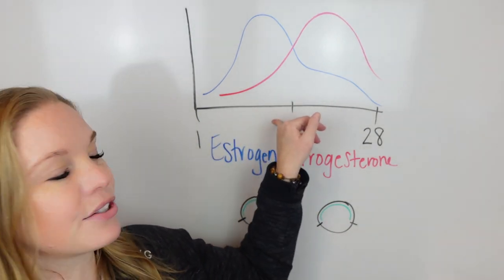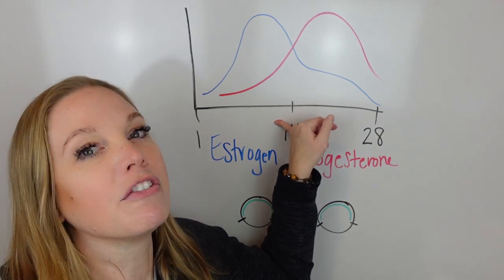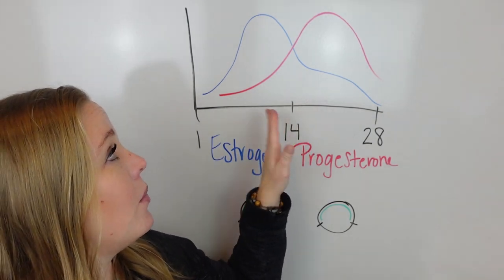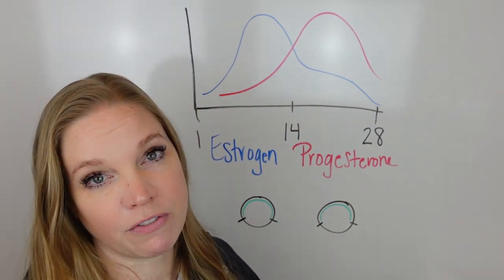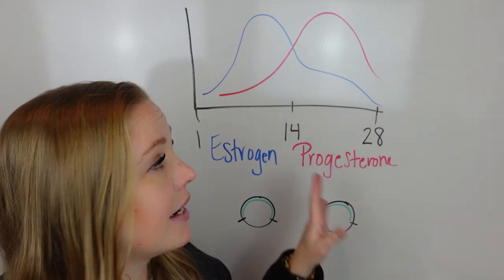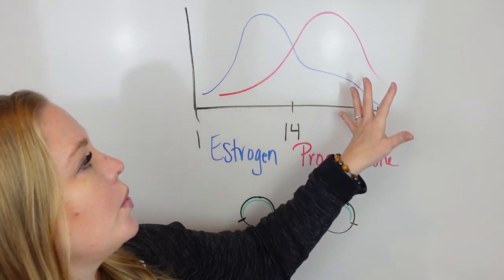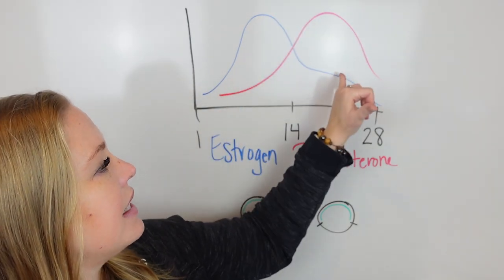But when we look at estrogen in general, it is dominant more in the first half of the cycle. Day one is the first day of your period, and then day 14 would be about when you ovulate and about when those hormones shift over. This is a rough graph that I just sketched out here, so it's not perfect by any means. But you would want this level to be elevated here.